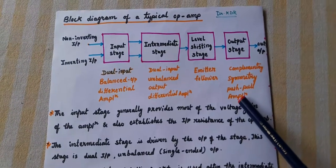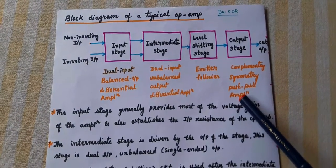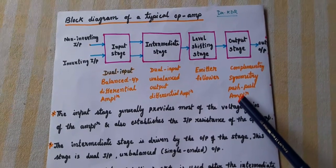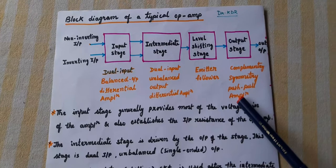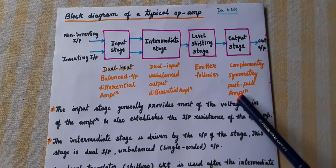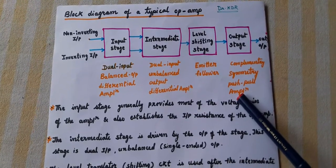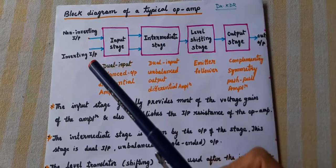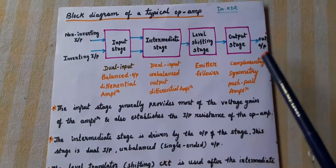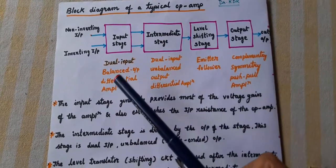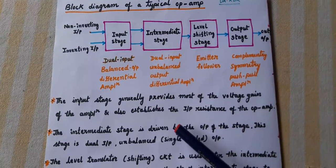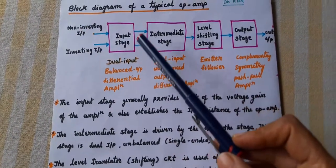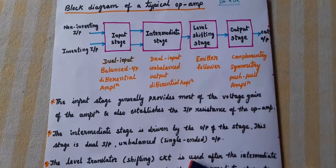So the block diagram of the op-amp consists of four stages: input stage, intermediate stage, level shifting stage, and output stage. An op-amp has two inputs — non-inverting and inverting — and one output. The input stage is comprising of dual input and balanced output differential amplifier.